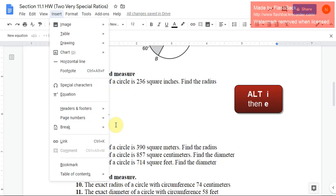So again, Alt+I+E gets me into Equation editor. 8.667. And again, this is a value that's rounded, that's approximate. We don't know the exact answer to the square root or the exact value of pi for that matter, so